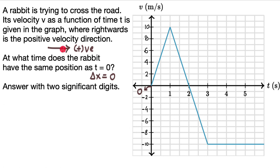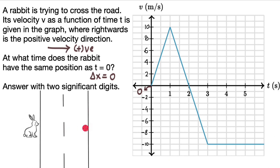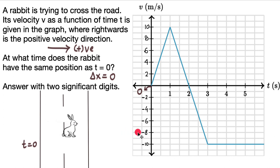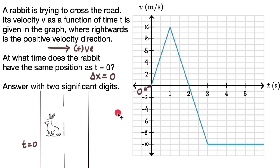What I try to do with these questions is draw a rough setup — actually draw a rabbit. It doesn't matter if it's a rabbit; you can draw a circle for an object. Draw a road and see what the question is trying to say. So here we have a rabbit trying to cross this road. At t equals to 0, the rabbit is just beginning to cross the road. It starts crossing the road, maybe stops, and then decides to come back to where it was in the beginning.